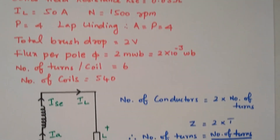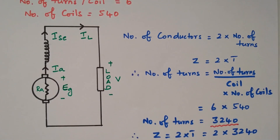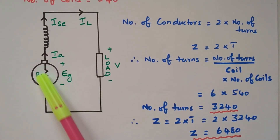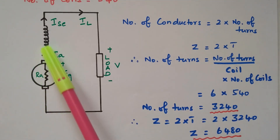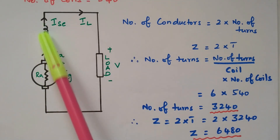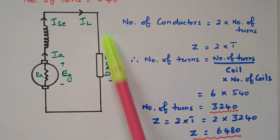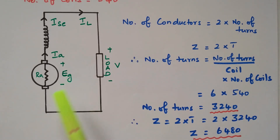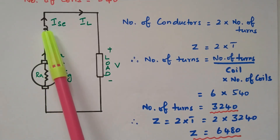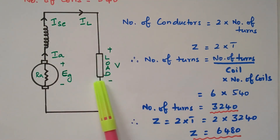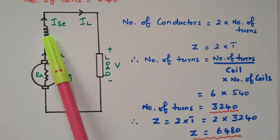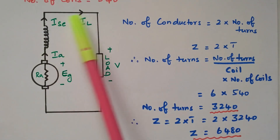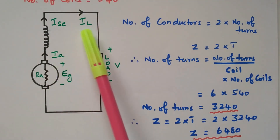In a series connected generator, the armature (rotating part) and field (stationary part) are both connected in series — that is why it is called a series generator. The load terminal is shown. EG is the voltage induced. RA is the armature resistance. The current from the armature is Ia; the same current flows through the series field (Isc) and through the load (IL). Since it is a series circuit, Ia = Isc = IL, all are equal.